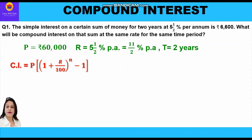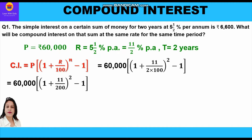Putting in the values: CI = 60,000 × [(1 + 11/(2×100))^2 − 1] = 60,000 × [(1 + 11/200)^2 − 1]. Solving the bracket first: (1 + 11/200) = 211/200, raised to the power 2.